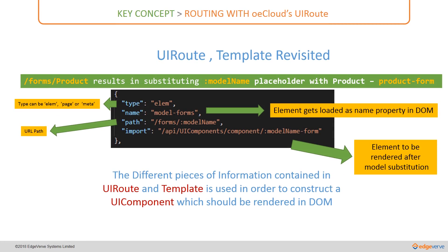Let us revisit the concept of UI route and templates. Based on the configuration information given as part of the UI route, we mention two important things: one is the path, which contains the model name, and the other is the template to be used to render the component. That information is available in the import section. The different pieces of information in the UI route — the path and import — are used to construct a final UI component, which is then rendered as part of the DOM.